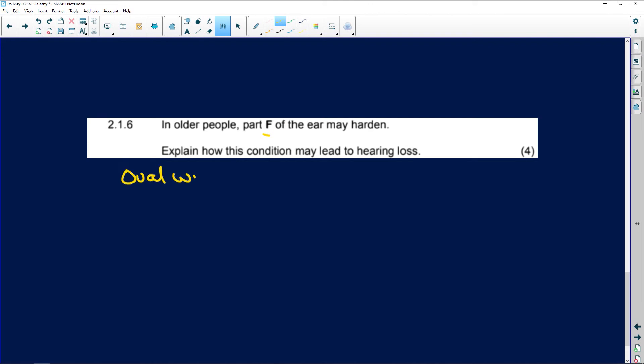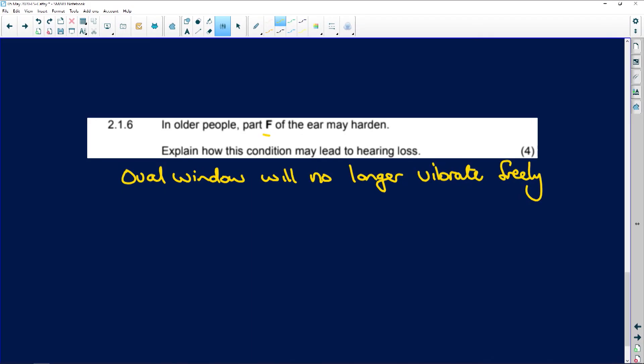The oval window, which is part F, will no longer vibrate freely or vibrate easily. Because remember, that's the job of the oval window. It takes the pressure waves from the sound waves and the hammer, the anvil, and the stirrup vibrate against the oval window, which then vibrates. And that vibration passes into the lymph fluid, the endolymph fluid inside the cochlea. So if that window is hard, it's thickened, it's hardened, it can't vibrate very nicely. So it won't vibrate freely.